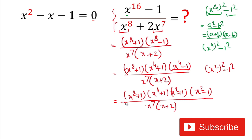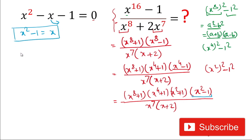Now we'll find the values of each term from the quadratic equation x² - x - 1 = 0. For x² - 1: rearranging, x² - 1 = x, so x² - 1 equals x. For x²: rearranging gives x² = x + 1.